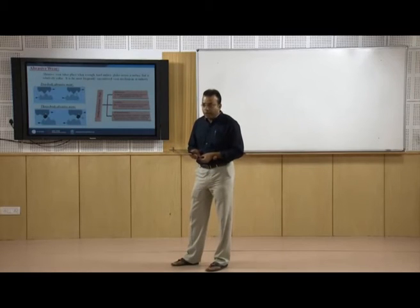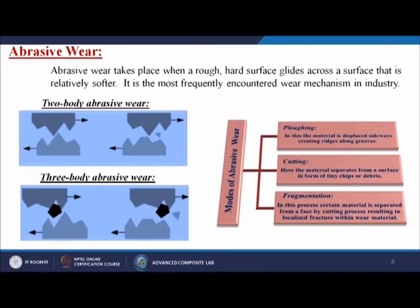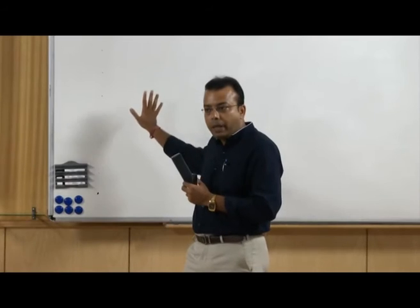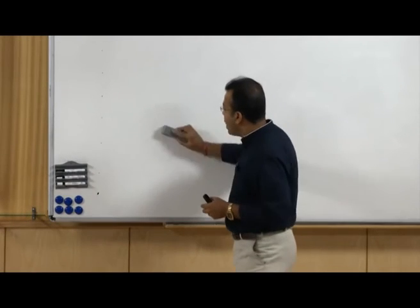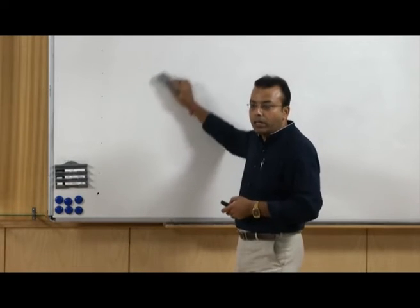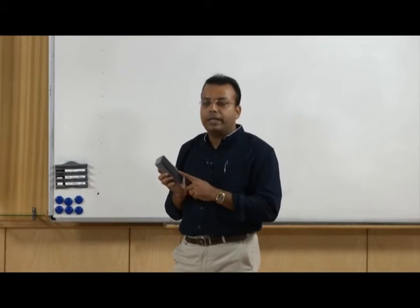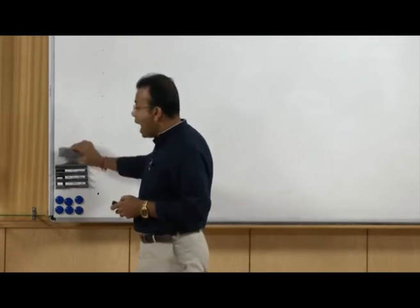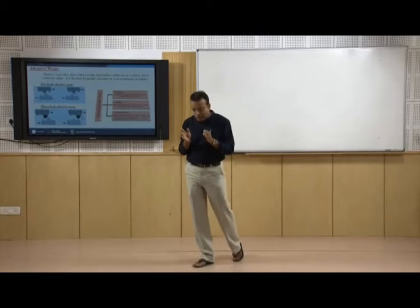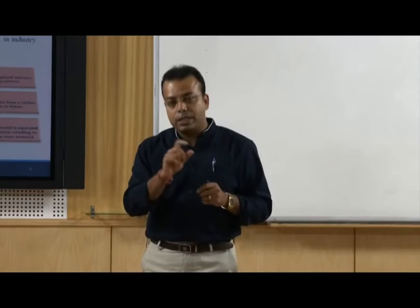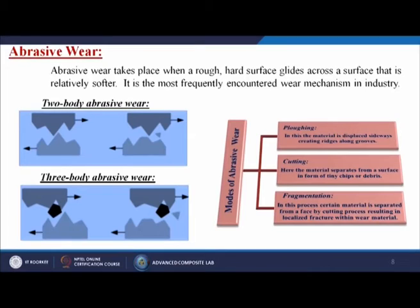Next is abrasive wear, which takes place when a rough hard surface glides across a surface that is relatively softer. The best example is a duster — the duster is the softer one and the blackboard is the harder one. When rubbing it, the softer material is continuously rubbing on the harder surface. Whatever wear takes place here is known as abrasive wear. The term 'abrasive wear' has come from the term 'abrasion.'